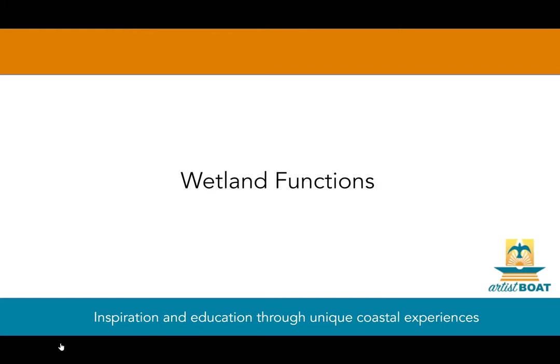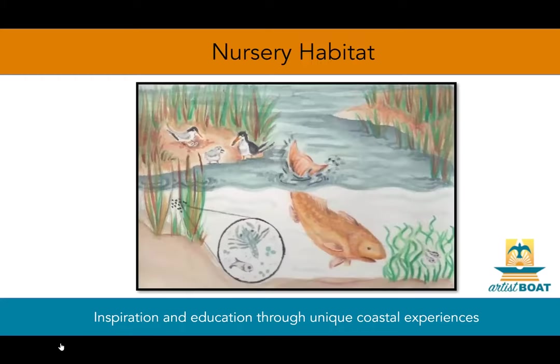Now that we've learned about the different types of wetlands in Galveston Bay, let's understand their four main functions. Near shore coastal wetlands serve as important nurseries for fish, crab, and other shellfish because the water is shallow, calm, and has great hiding spots. The total economic impact of commercial fishing at the wholesale level is more than 400 million annually, employing about 30,000 coastal residents. The total economic impact of saltwater sport fishing in Texas is almost 2 billion annually, employing about 25,000 coastal residents.